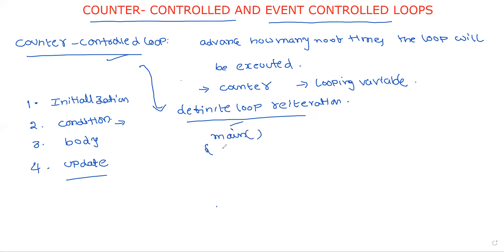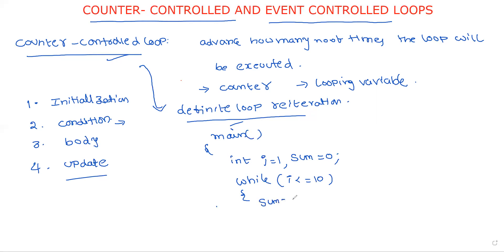For example, to perform addition of numbers from 1 to 10: int i = 1, sum = 0; while (i <= 10) { sum = sum + i; i++; } After coming out of the loop, print the sum value: printf("%d", sum).